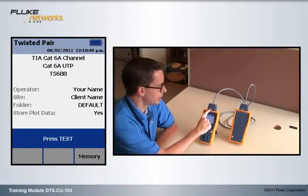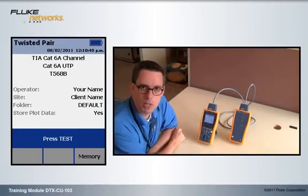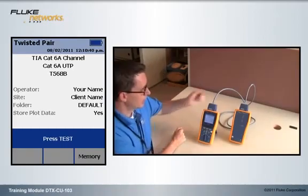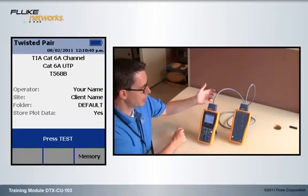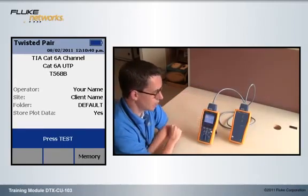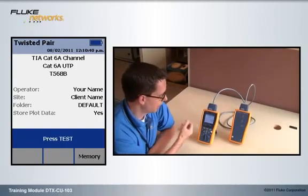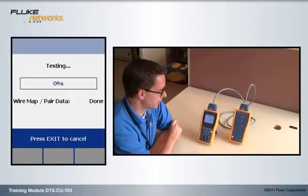So on my DTX here, I have the two channel adapters. This is what ships with the DTX Keyword Analyzer. And I've connected my CAT6 patch cord from the main to the remote. My test limit has been selected as TIA CAT6A channel. I'm good to go. Let's hit that test key.